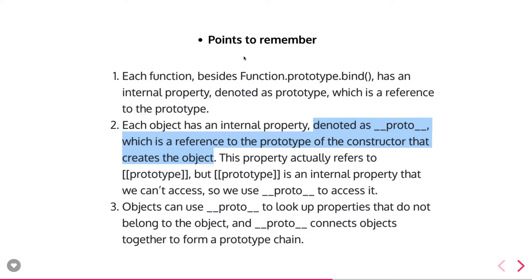An object can use __proto__ to look up properties that do not belong to it. Consider an example: you have object A with three properties, and you create object B with some properties and assign object A to it. You add more properties to object B, then assign B to C. Now if you try to access a property not on C, it will look up to that property in object B and then object A because there is a proto linking between C, B, and A. Using __proto__ you traverse the chain to get the value. That is called the prototype chain.